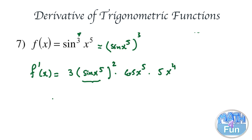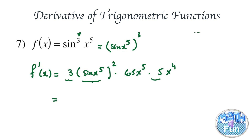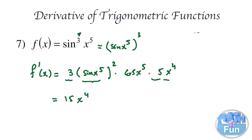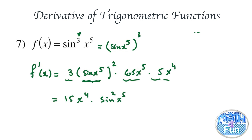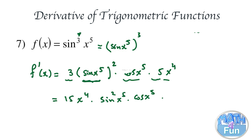Simplifying everything together: 3 times 5 gives 15, and we have x to the power of 4. We can write the trig parts in any order. The result is 15x to the power of 4 times sine squared of x to the power of 5 times cosine of x to the power of 5.